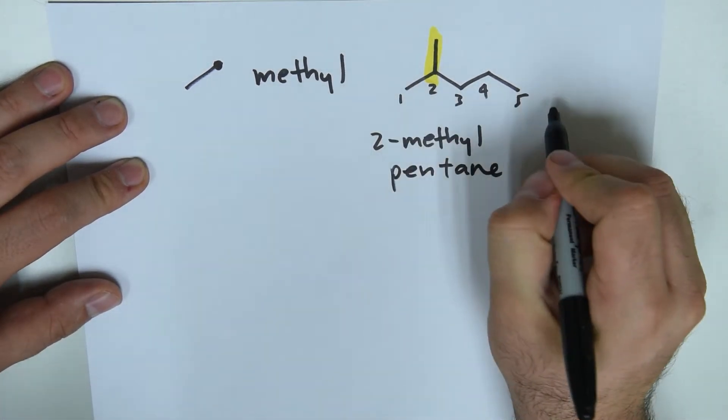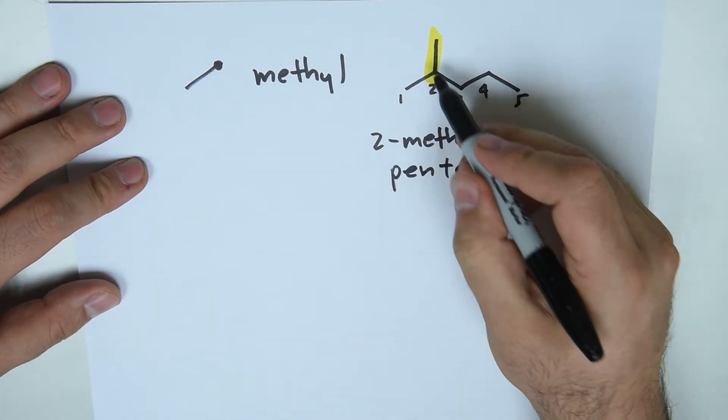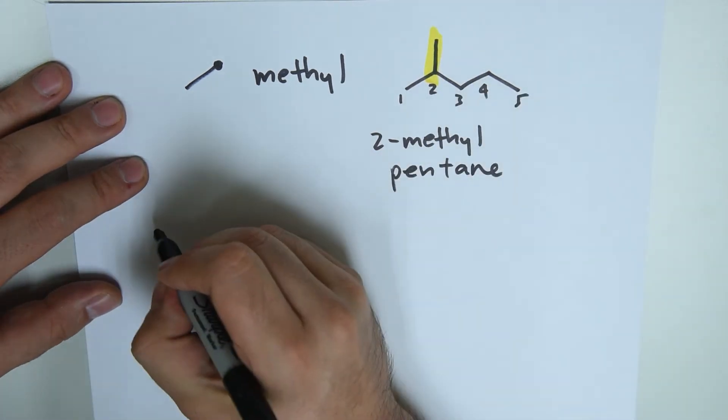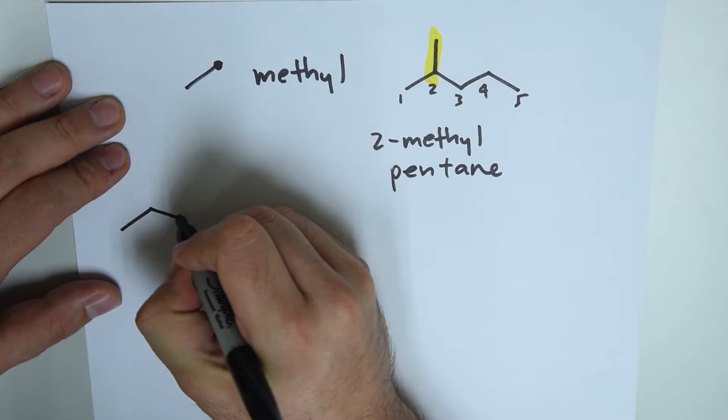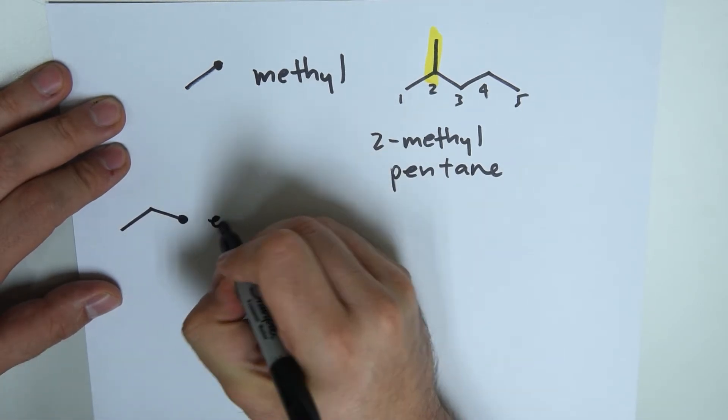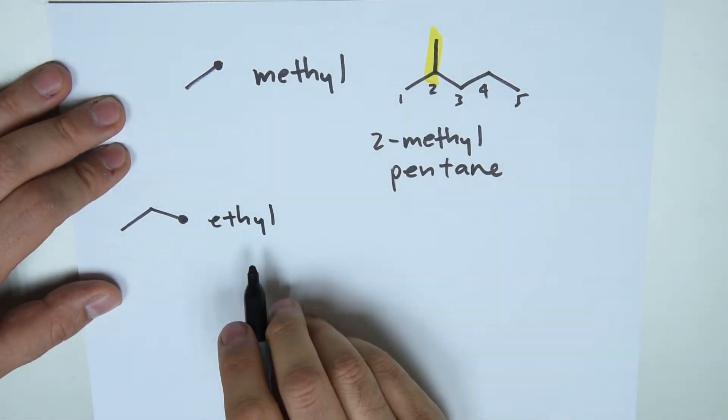So five carbons, only single bonding with, at number two, we have methyl. If we have two carbons and this plug simulating the lack of that hydrogen, we have ethyl.